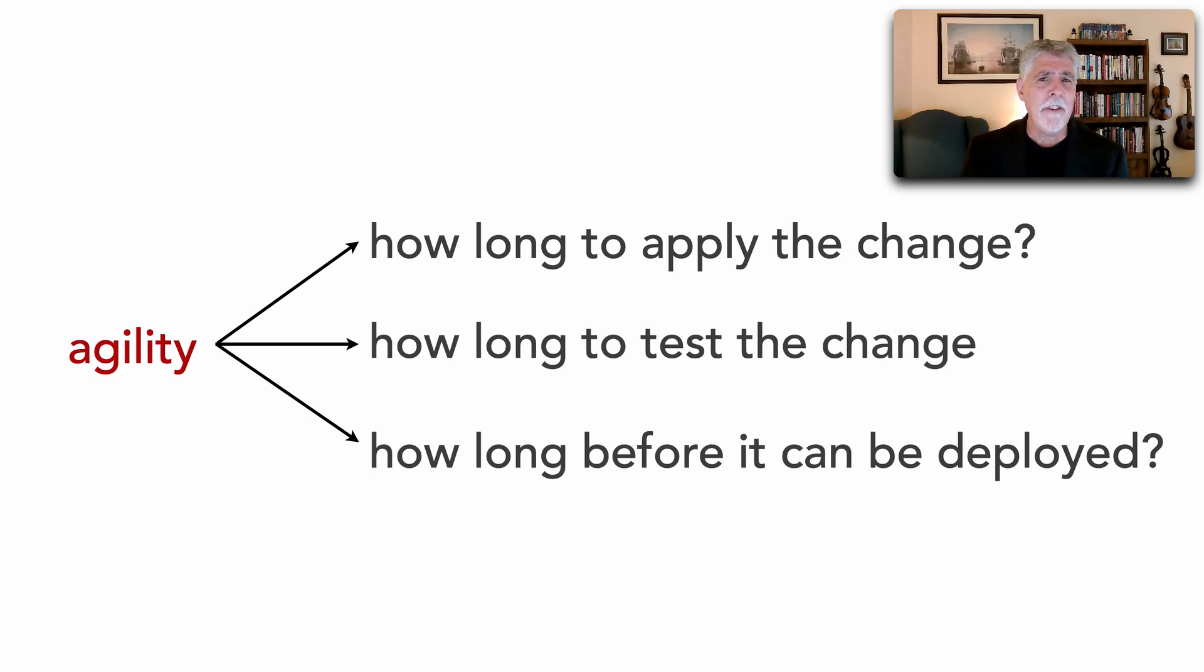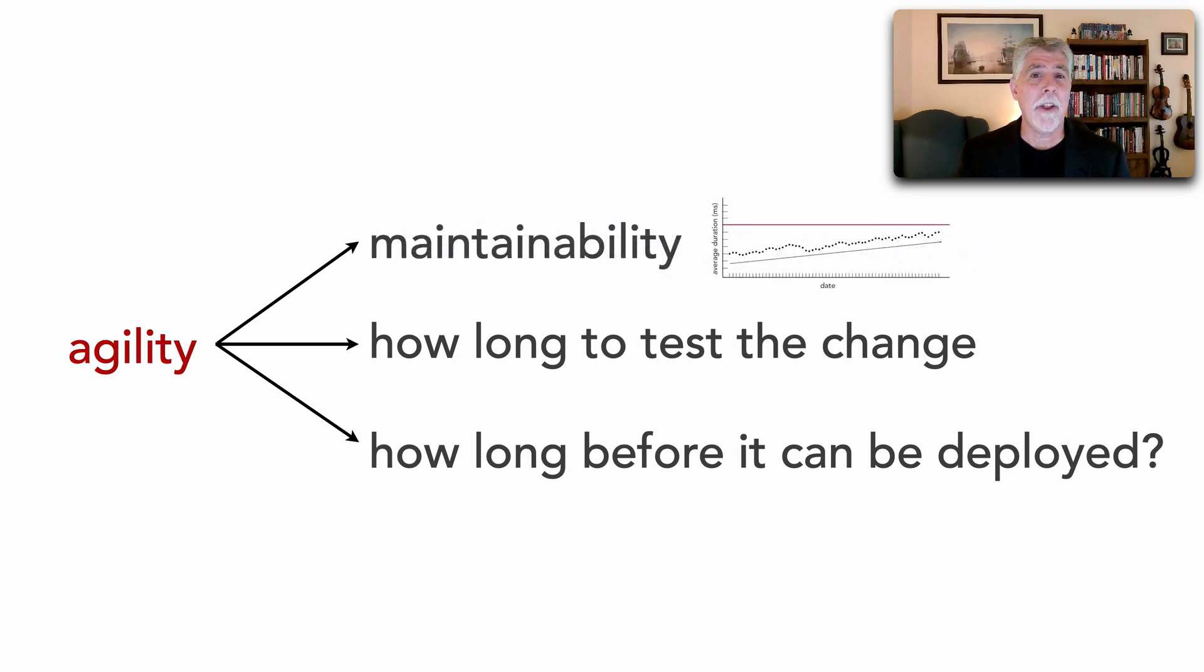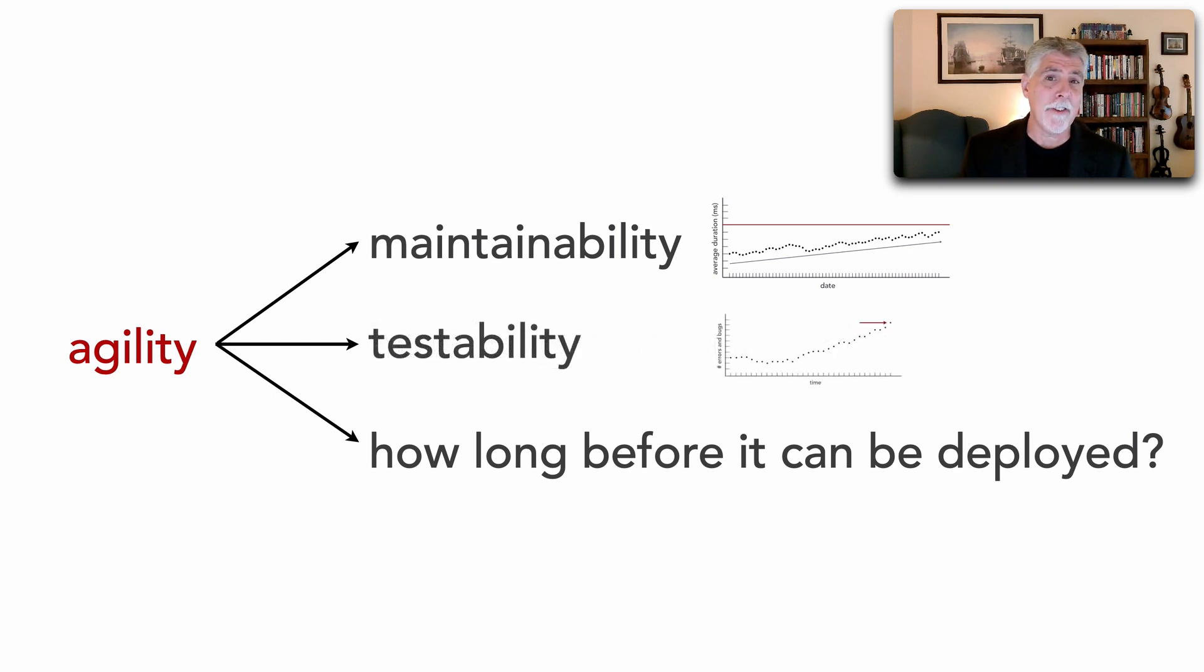And it's interesting, these as well as when we talked about reliability, can all be measured. How long does it take to apply the change? Is it an architecture characteristic known as maintainability of the application? Is it easy to locate the area in the application or architecture that needs to change? How many places do we need to apply that change? How long does it take to test is related to another architecture characteristic, which we also could measure, and that's testability. The ease of and the completeness of testing.